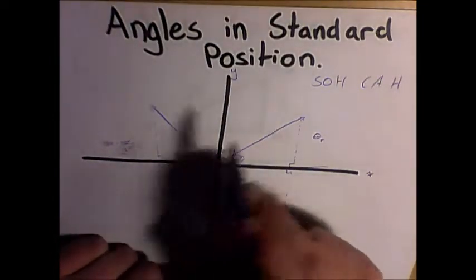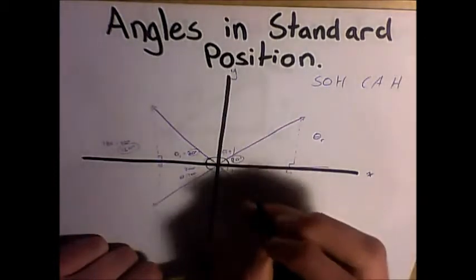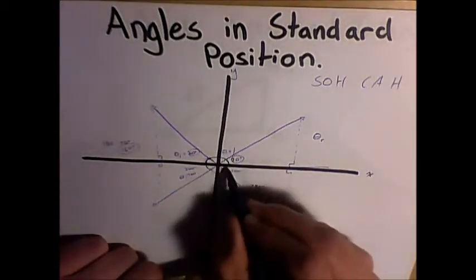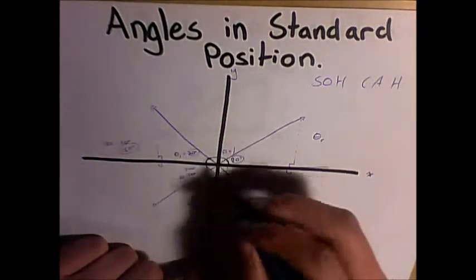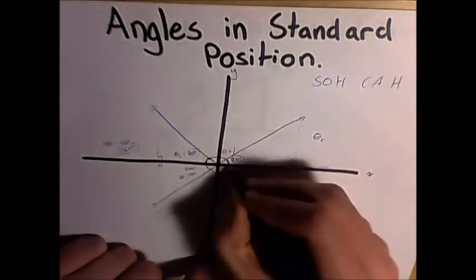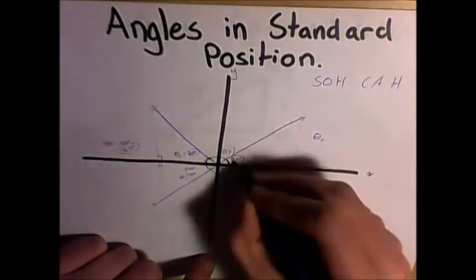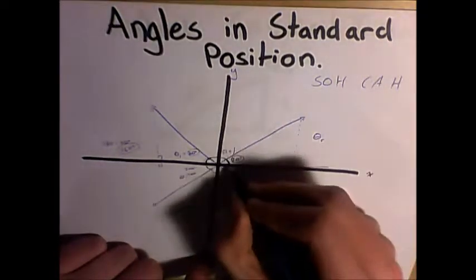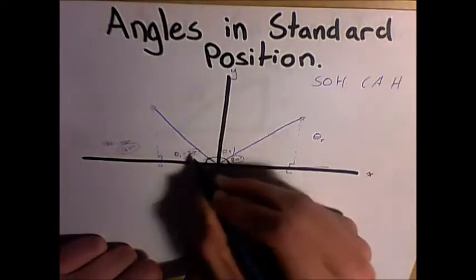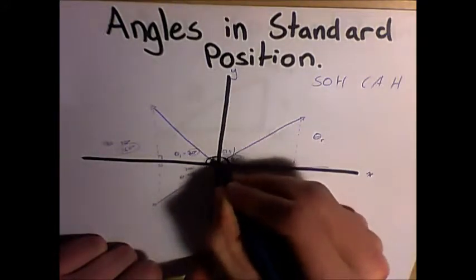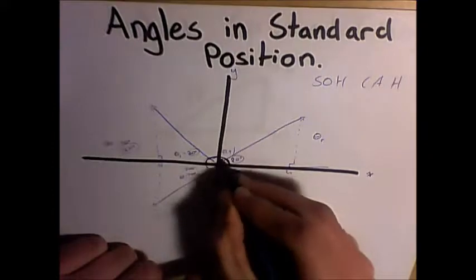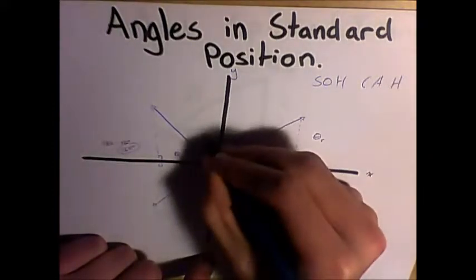But we also have to look at angles in standard position. Now, angles in standard position are just angles from the initial arm on the x-axis here to the terminal arm wherever it is, regardless of which quadrant it is in. So here our standard position angle is only 20 degrees, but in this one, instead of our standard position angle being 20 degrees, it's this angle right here from the initial arm to the terminal arm, and we find this to be 160 degrees.